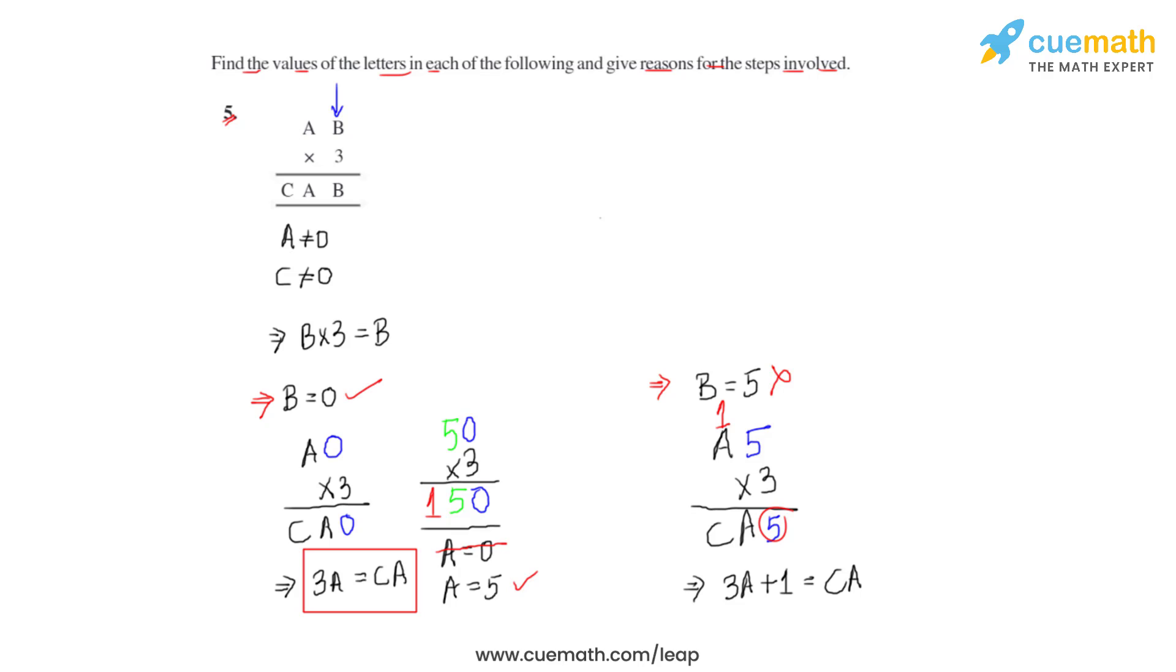If we take this product, this is the final result where we have got the value of A to be 5, the value of B to be zero, and the value of C as 1. These are the three values of the letters which we have got in the question, and this is how we answer the fifth question of this first exercise.